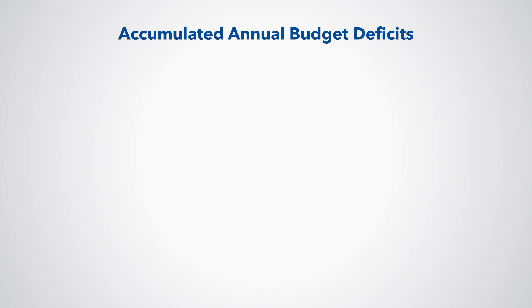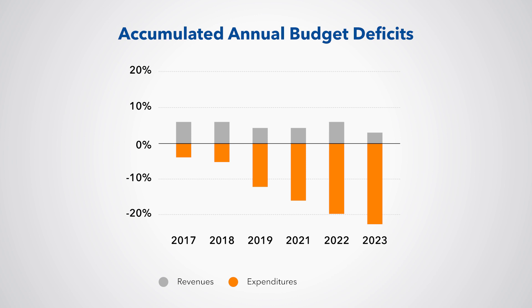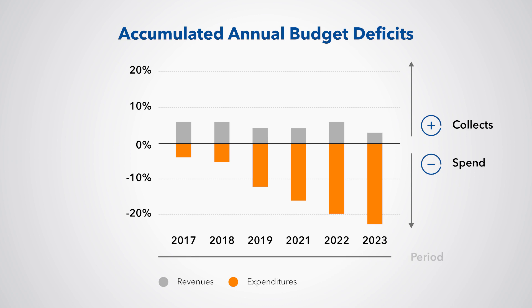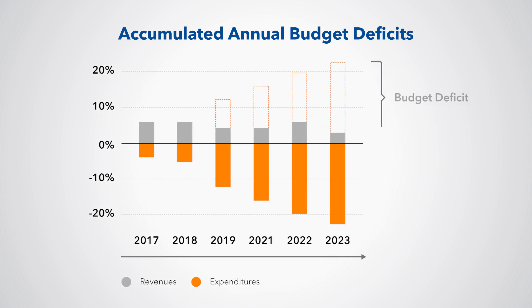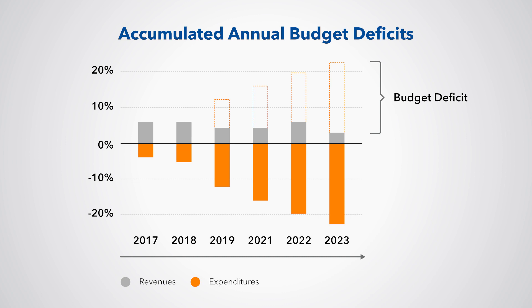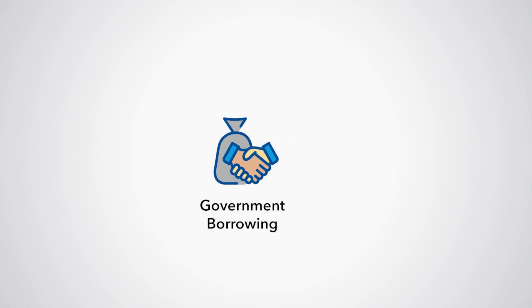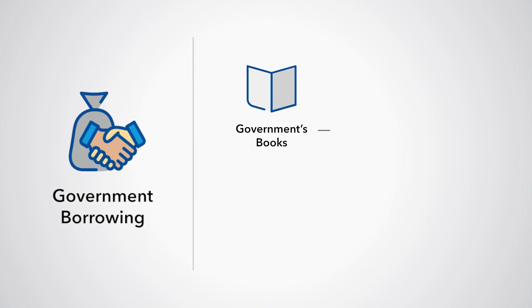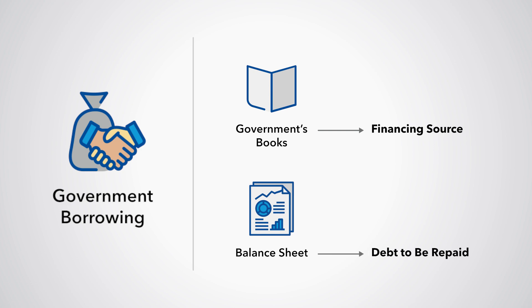Public debt is created as annual budget deficits accumulate, the result of years of government spending more than it earns from revenues. When a country spends more than it collects in revenue in a particular period, it creates a budget deficit. This gap in the budget is often filled by government borrowing from either domestic or foreign creditors. This borrowing gets recorded on the government's books as a financing source and on its balance sheet as debt to be repaid.